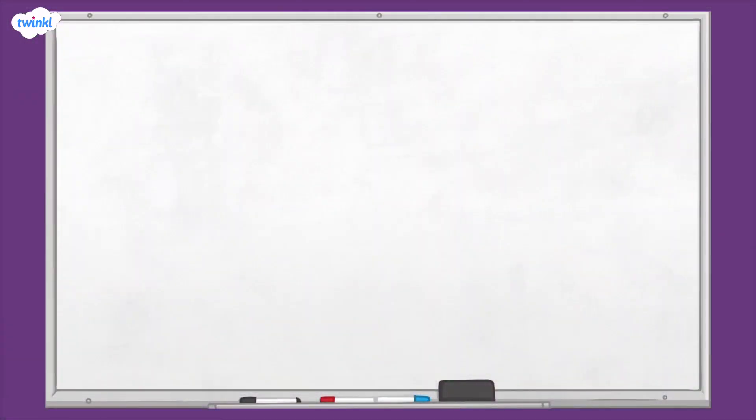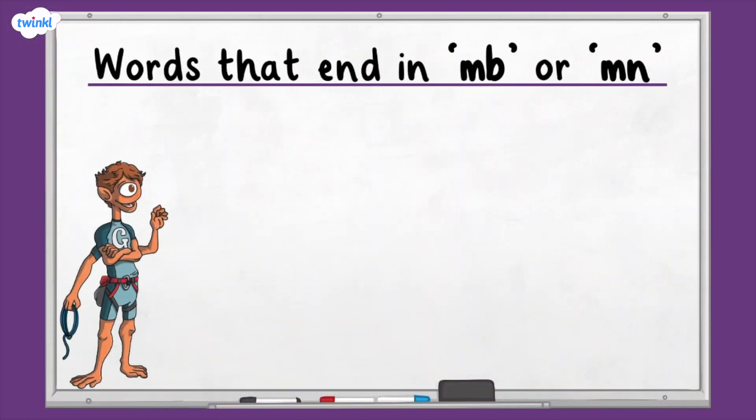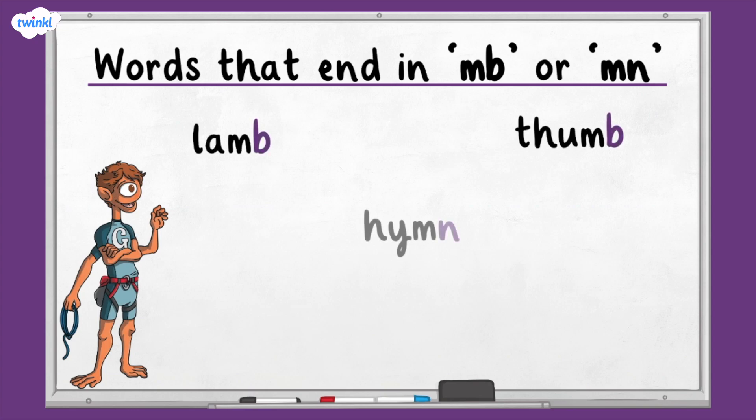Let's take a look at some more examples of words that contain silent letters. Interestingly, some words that contain a silent letter in one accent might not contain a silent letter in another accent. Many words that end in M-B or M-N do not pronounce the B or the N. For example: lamb, thumb, hymn, solemn, autumn.